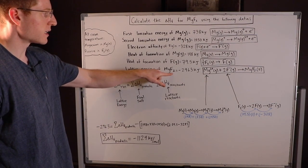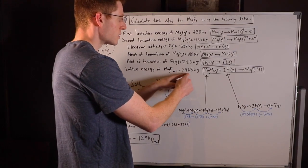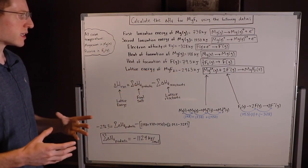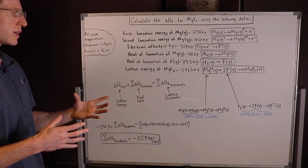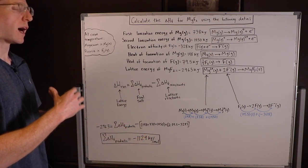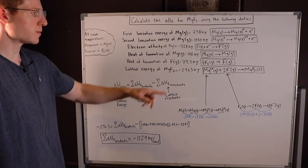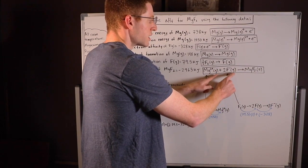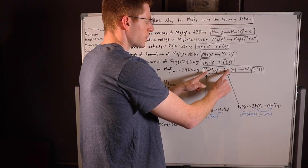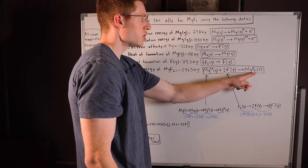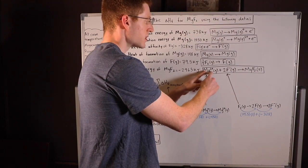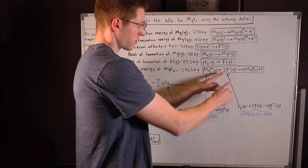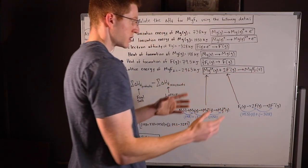The lattice energy of magnesium fluoride is negative 2,963 kilojoules. Sometimes they give this as a positive number, but I think it's easier to make it negative. You can think about lattice energy as either the energy given off or the energy absorbed — I like to think about it as the energy given off, which makes it negative. Whenever you have a lattice formation, the reactants are in the gaseous state with their respective charges. Since we have MgF₂, we have two fluorines and one magnesium. The magnesium has a plus two charge to balance out the two minus one charges from the fluorines, making neutral magnesium fluoride solid.